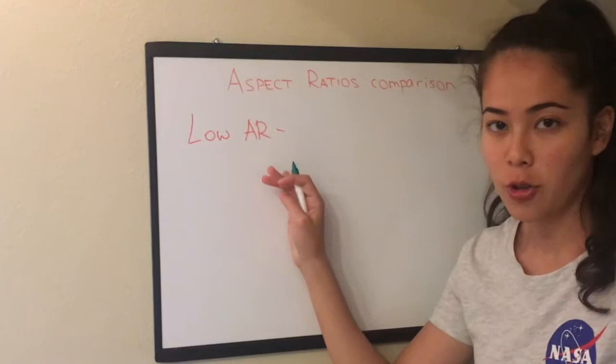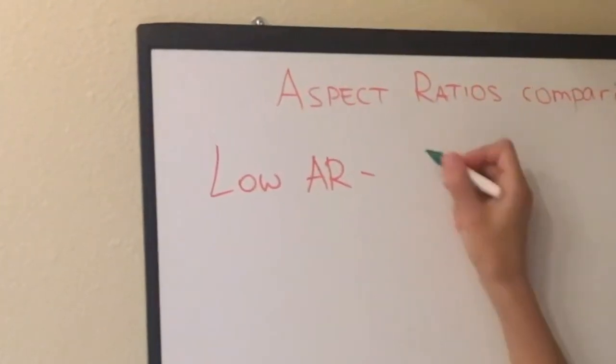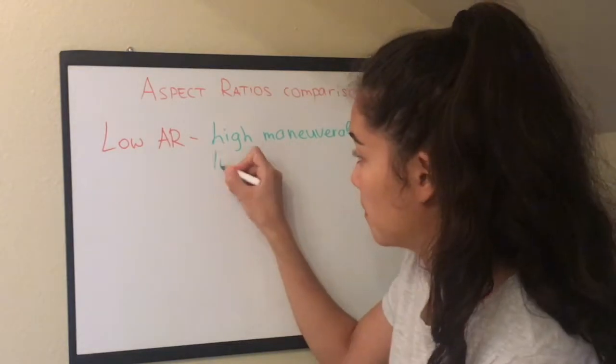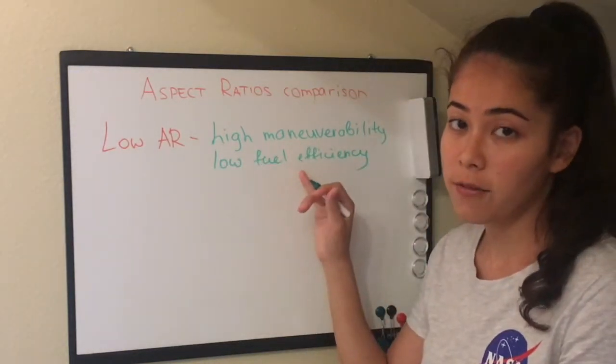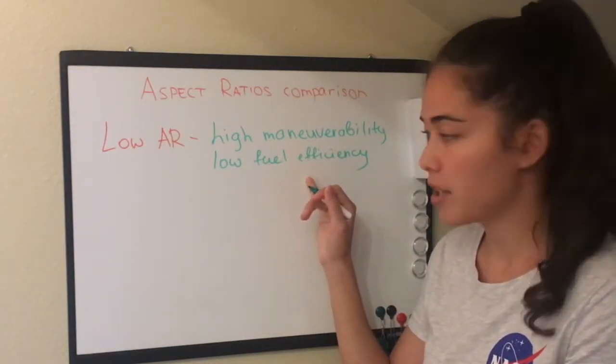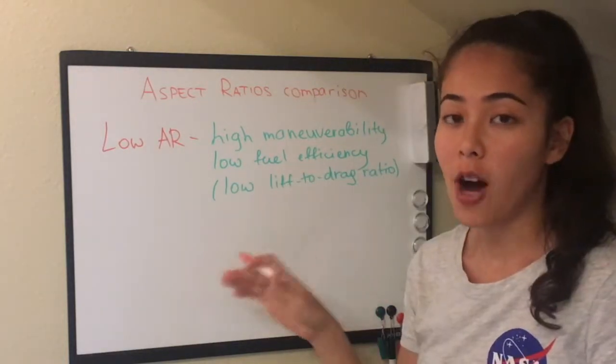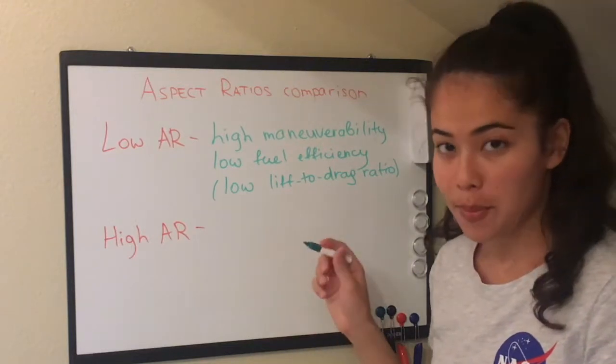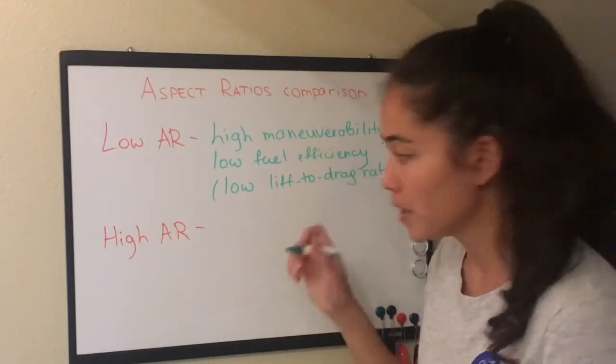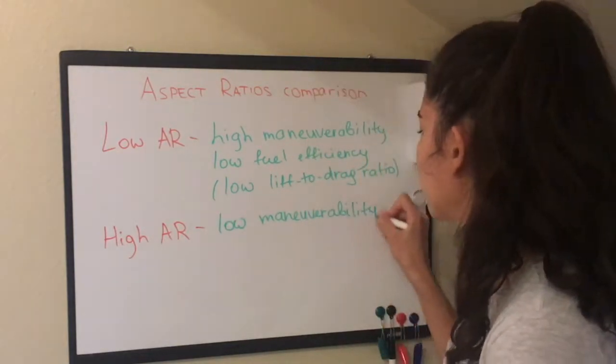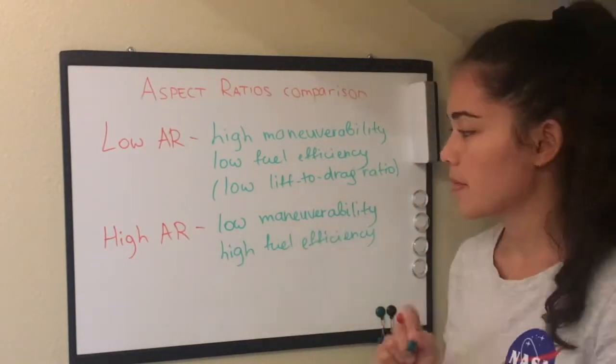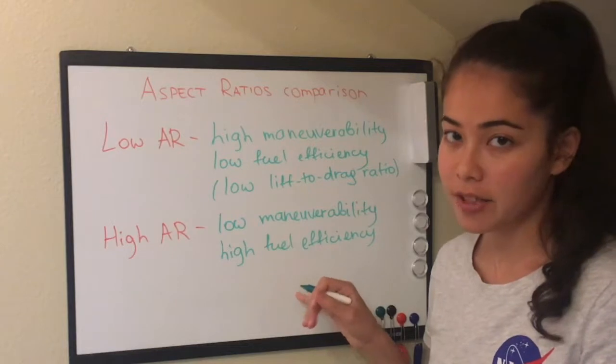With low aspect ratio we have high maneuverability and low fuel efficiency, which results from low lift to drag ratio. And for high aspect ratio we have the opposite, which is low maneuverability and high fuel efficiency, which results from high lift to drag ratio.